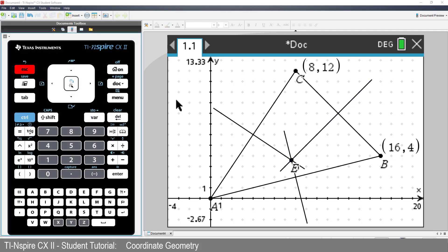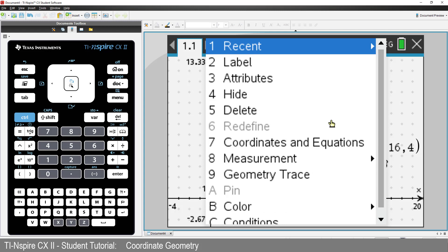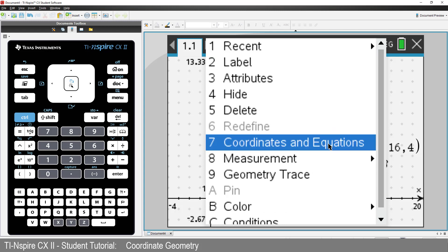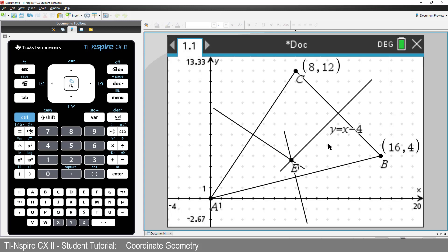You may have noticed already from the contextual menu that the calculator can determine coordinates and equations. So move the mouse over one of the perpendicular bisectors. Press Control followed by Menu and select Coordinates and Equations.